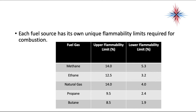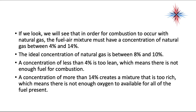Each fuel source has its own unique flammability limit required for combustion. For methane, 14% is as high as you can go and 5.3% is as low as you can go — anything outside these ranges, the fuel will not burn. For natural gas, the fuel-air mixture must have a concentration between 4 and 14%, with an ideal concentration between 8 and 10. A concentration of less than 4% is too lean — not enough fuel. A concentration of more than 14% is too rich — not enough oxygen for all of the fuel.